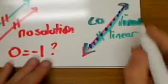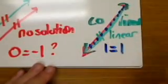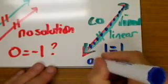So when you try to solve this, you're going to get something really odd. You're going to get something like one is equal to one, something that's always true.